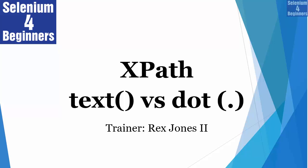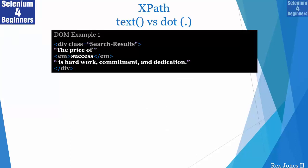Hello and welcome to Selenium for Beginners. This video is a spinoff from the XPath function video number 44. In that video, we looked at dynamic values — the XPath text function and dot located a value that changed in the DOM. However, I mentioned there is a difference between the text function and dot. We are going to look at the difference between both XPath concepts using this presentation, then demo Google.